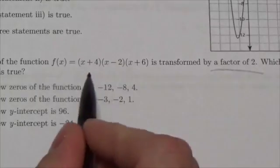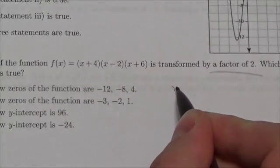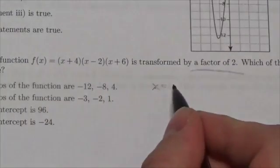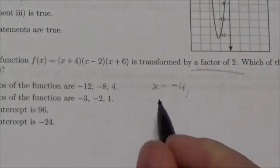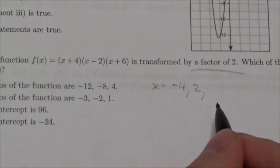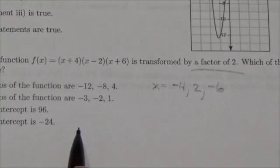So our zeros, the roots, are really easy to come up with. We just have to look at the different factors here. If a factor is x plus 4, we know that we've got negative 4 as a root. x minus 2 means we've got 2 as a root. And x plus 6 means we've got negative 6 as a root. So those are our x-intercepts.